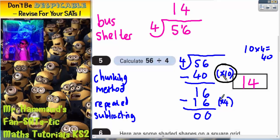A chunk of 10 plus a chunk of 4 makes altogether a chunk of 14. So there are 14 4s in 56. Well this gives us the same answer as we got from the more efficient bus shelter method at the top there.